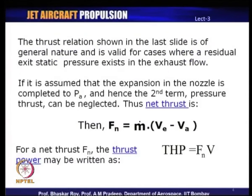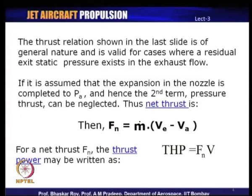If the aircraft starts flying at a higher velocity V_a, the thrust will go down unless V_e increases or m-dot increases. You have to find ways to increase either V_e or m-dot to maintain thrust, otherwise thrust will start going down. This is a known phenomenon that arises from the simple momentum equation and applies to certain kinds of jet engines as we shall see later.